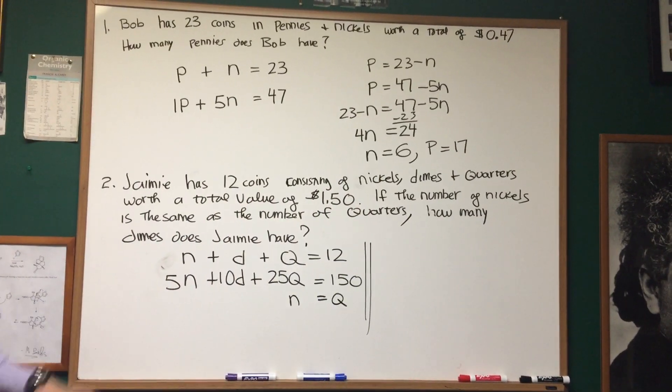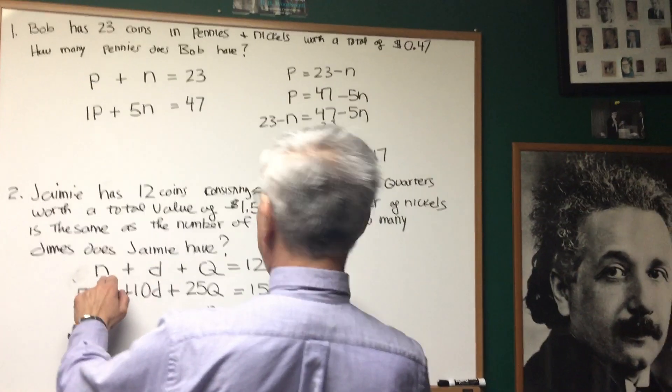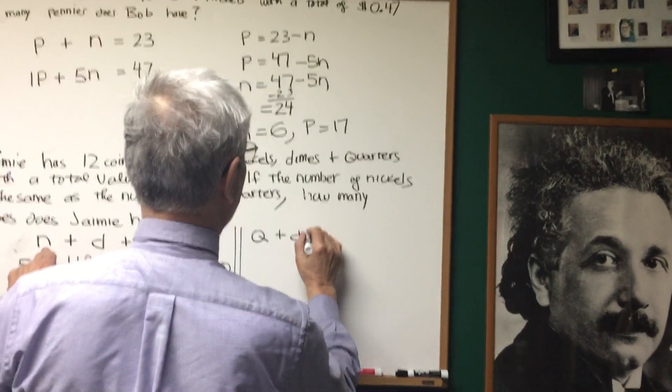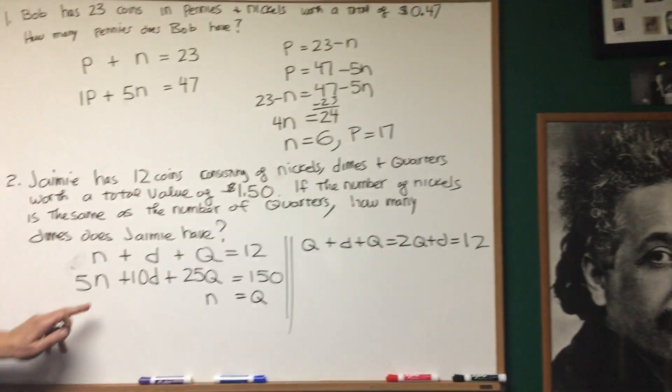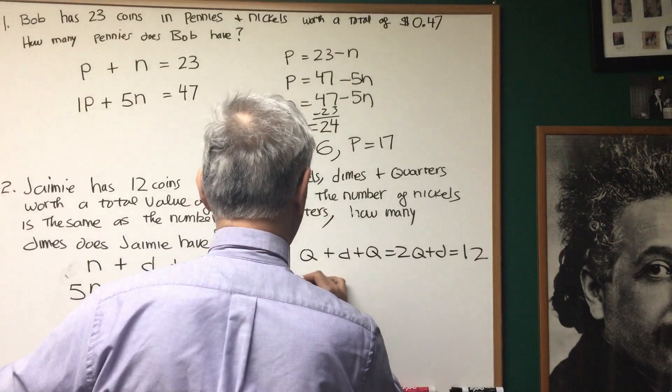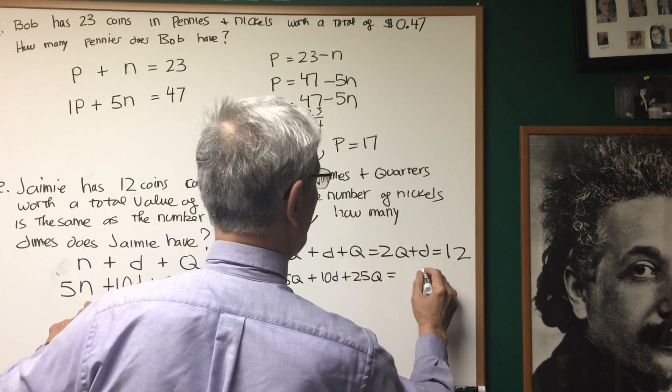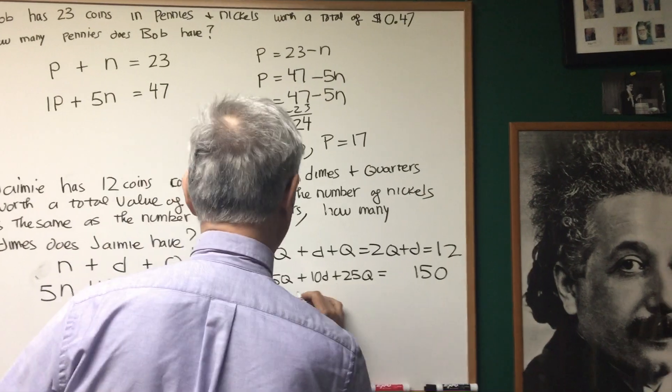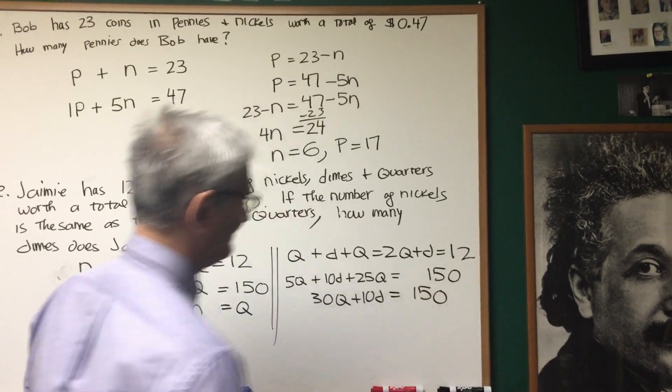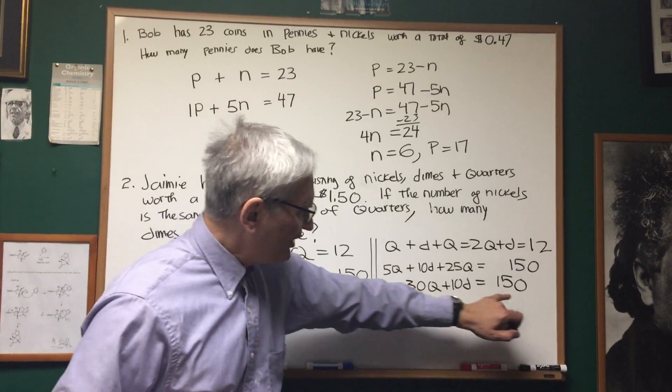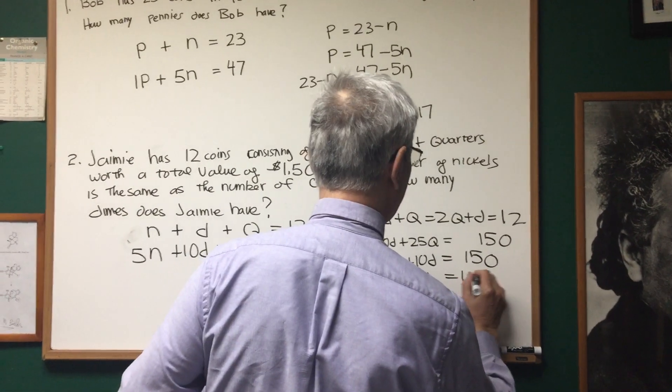How are we going to solve this? Well, since N is equal to Q, I can rewrite each of these equations by replacing N with Q. Like the first equation, since N is equal to Q, I can write this as Q plus D plus Q, which is 2Q plus D, and that equals 12. In the second equation, I can replace N with Q again. So, this is going to be 5Q plus 10D plus 25Q, and that's going to be equal to 150. If I add those two together, 5Q plus 25Q is 30Q. So, 30Q plus 10D equals 150. In fact, I can see that the three terms are multiples of 10. I can divide them by 10. This can become 3Q plus D equals 15.